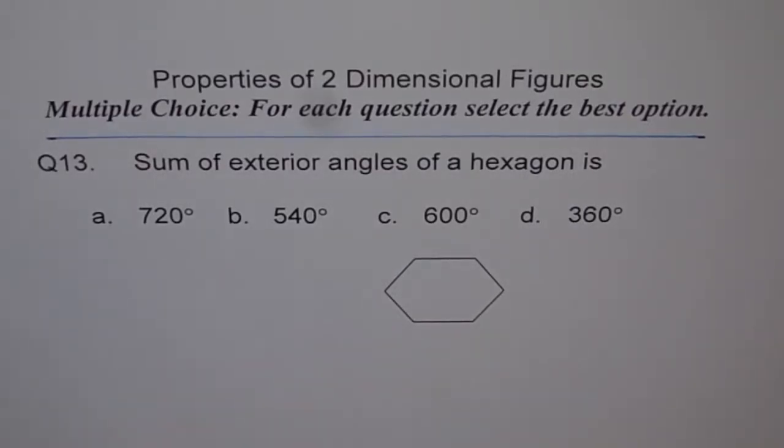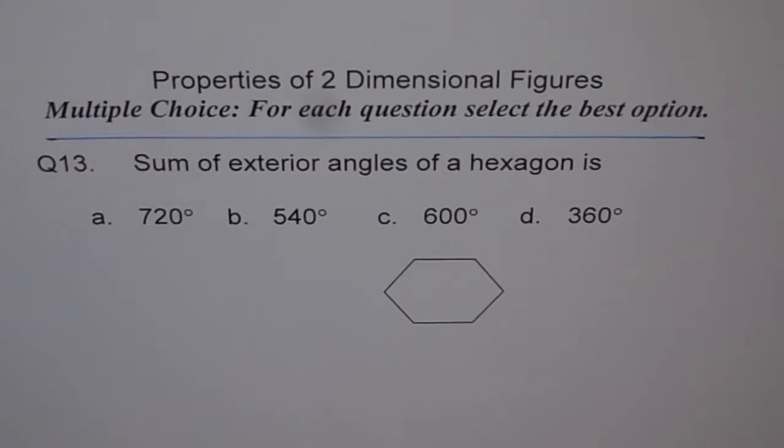Properties of two-dimensional figures. Multiple choice question. Question 13: Sum of exterior angles of a hexagon is - four choices: 720 degrees, 540 degrees, 600 degrees, or 360 degrees.